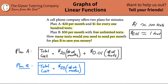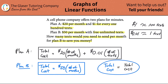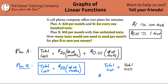Now the question asks how many texts for Plan B to save you money. It's useful to first ask: at what point would you be indifferent between Plan A and Plan B? In other words, how many texts would it take for Plan A to equal Plan B? That makes the math easier — instead of 'more or less,' solving for equality is straightforward. So we're asking: when is the total cost of Plan B equal to the total cost of Plan A?